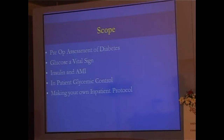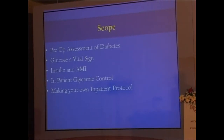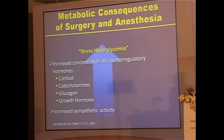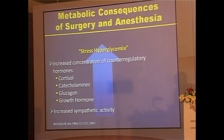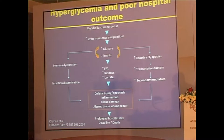I'm going to talk about insulin and myocardial infarction, inpatient glycemic control, and ideally you should make your own inpatient protocol. The commonest thing we see when a patient comes to hospital is usually for surgery. The metabolic consequences of anesthesia and surgery produce stress hyperglycemia — driven by counter-regulatory hormones: cortisol, catecholamines, glucagon, growth hormone, and excess sympathetic tone — all leading to hyperglycemia. We also just saw a case of steroid-related hyperglycemia.